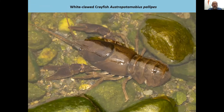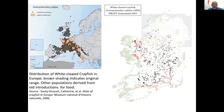This is a map showing the distribution of white-clawed crayfish. The brown shading indicates the regions where the species is considered native. It is however a species complex and the Italian population is now considered perhaps a different species. In Britain, Ireland, and Spain, the populations are derived from old introductions and the species has spread throughout those areas.